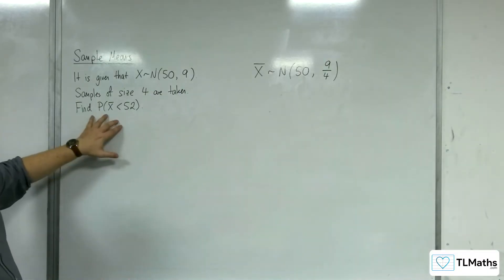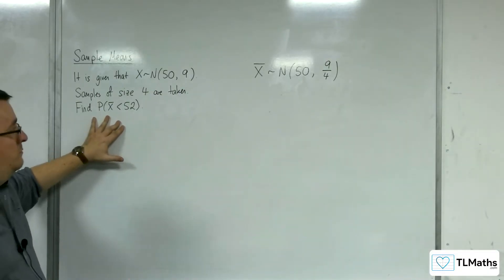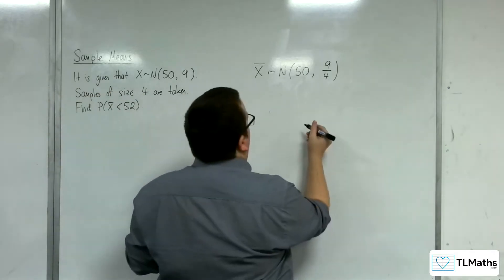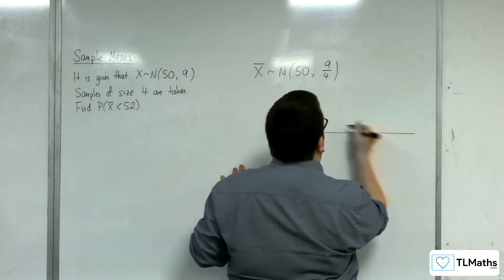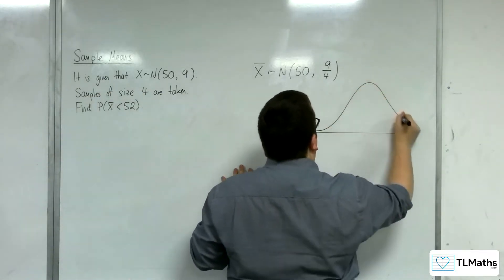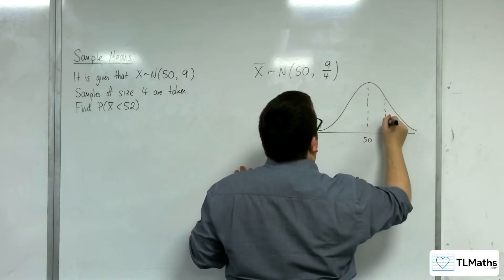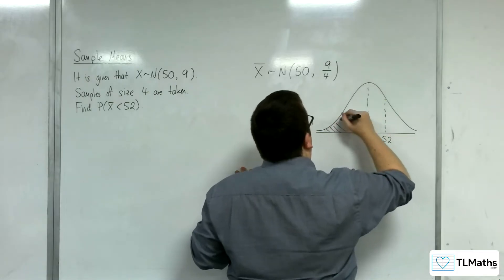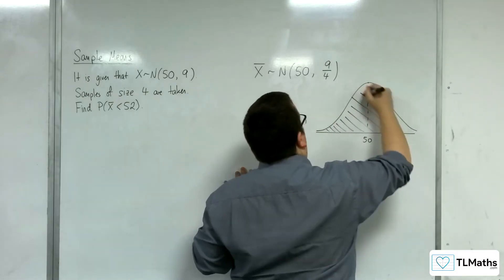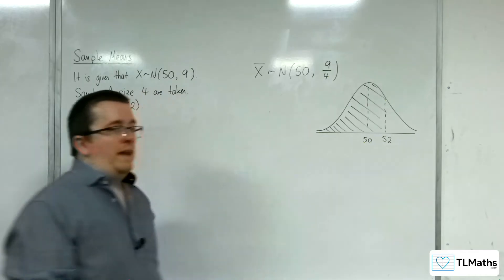So, then find the probability that x bar is less than 52. Let's draw a diagram. Here's my mean at 50, here's 52, find the probability that it is less than that, so that area there.